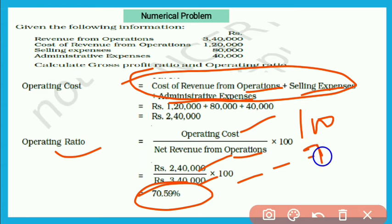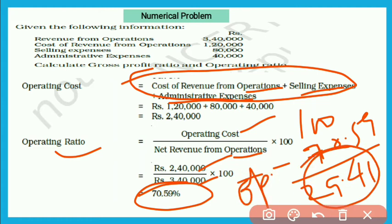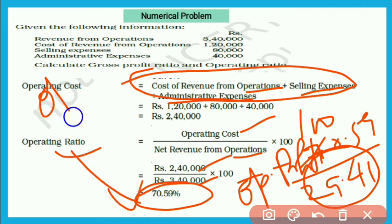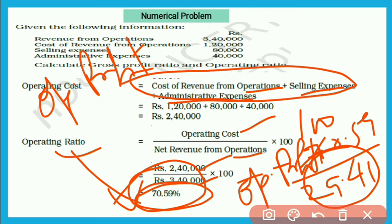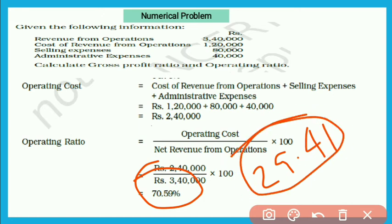70.59 को 100 से minus करें तो 29.41 — यह हमारा operating profit बचता है। क्योंकि operating ratio और operating profit ratio एक दूसरे के complementary हैं। अगर एक पता है तो दूसरे को 100 से minus कर देंगे। तो यहाँ operating ratio 70.59 है तो operating profit ratio = 100 − 70.59 = 29.41% — इसका मतलब जितना ratio कम होगा उतना ज़्यादा profit बचेगा।